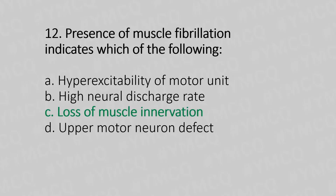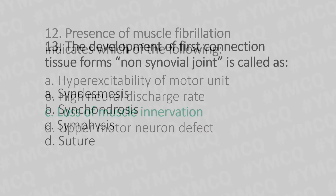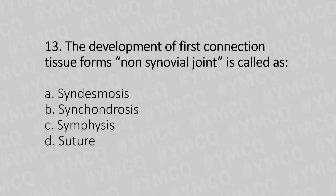Question 13: The development of first connective tissue from a non-synovial joint is called — Option A: syndesmosis. Option B: synchondrosis. Option C: symphysis. Option D: suture. The answer is option B — synchondrosis.